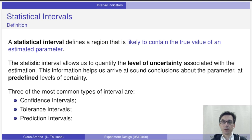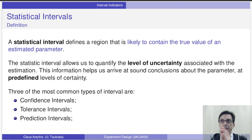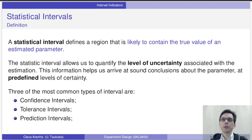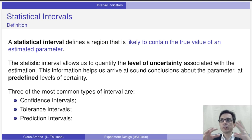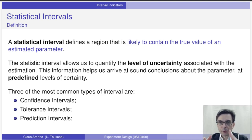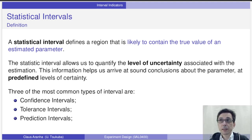A statistical interval, like the point indicator, is a function that calculates a value from experimental data. It calculates a region that is likely to contain the true value of the estimated parameter. The statistical interval allows us to quantify the level of error associated with an estimate. This helps us arrive at a better conclusion about data from an experiment — for example, we can say not only that we estimate the mean to be 48, but also how certain we are of that estimate.